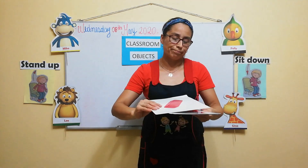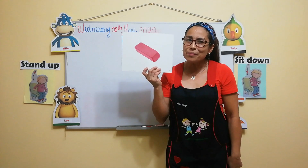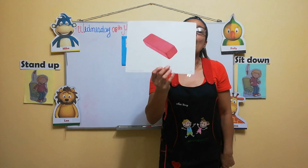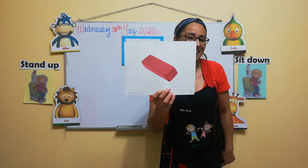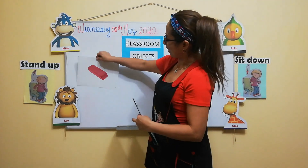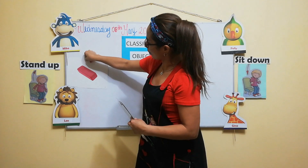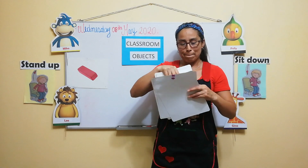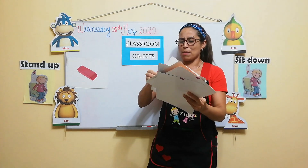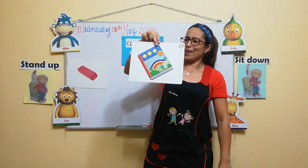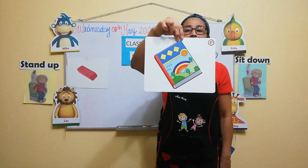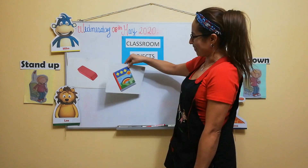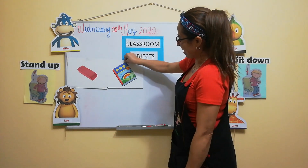Look. Do you remember? Do you remember? What is it? It's an eraser. Yes. An eraser. Okay. So, eraser. Okay. Eraser. Now, don't you remember? What is it? It's a book. It's a book. Book. Yes. All right. Okay. Book.